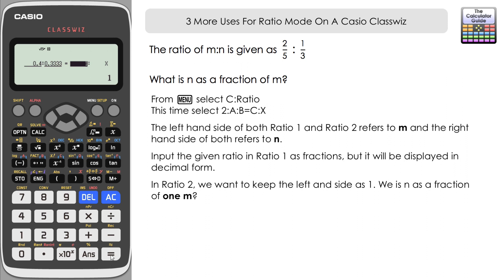The right-hand side is going to be the fraction of that one m that n is. If we just press equals here, we've got 5 sixths. And what that tells us is that n, whatever that might be, is 5 sixths of m.